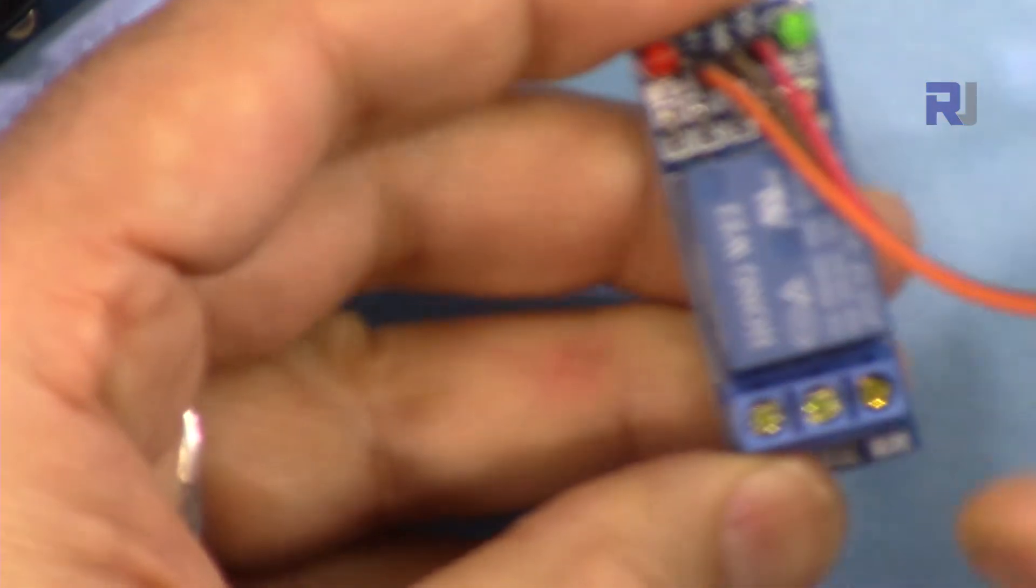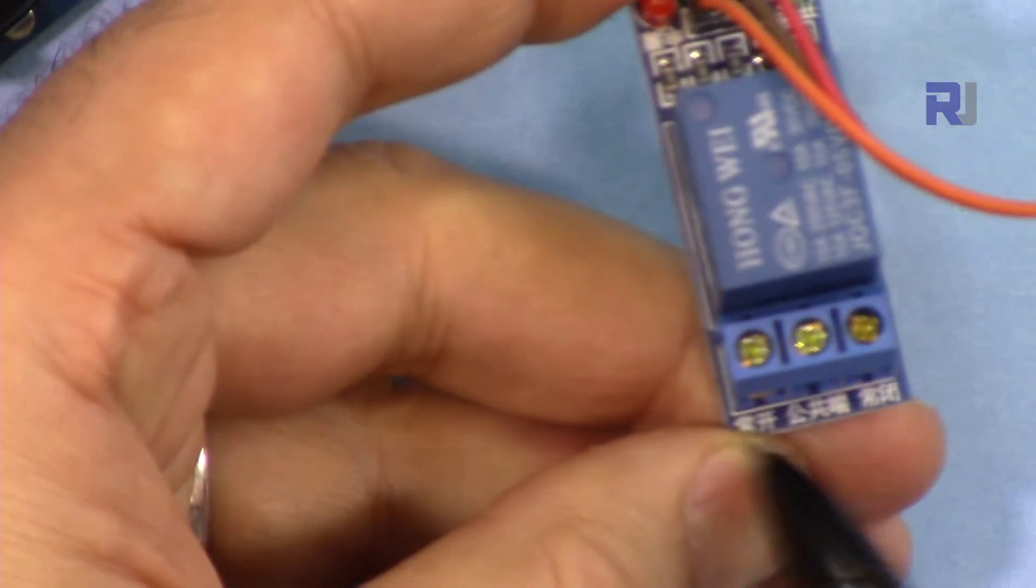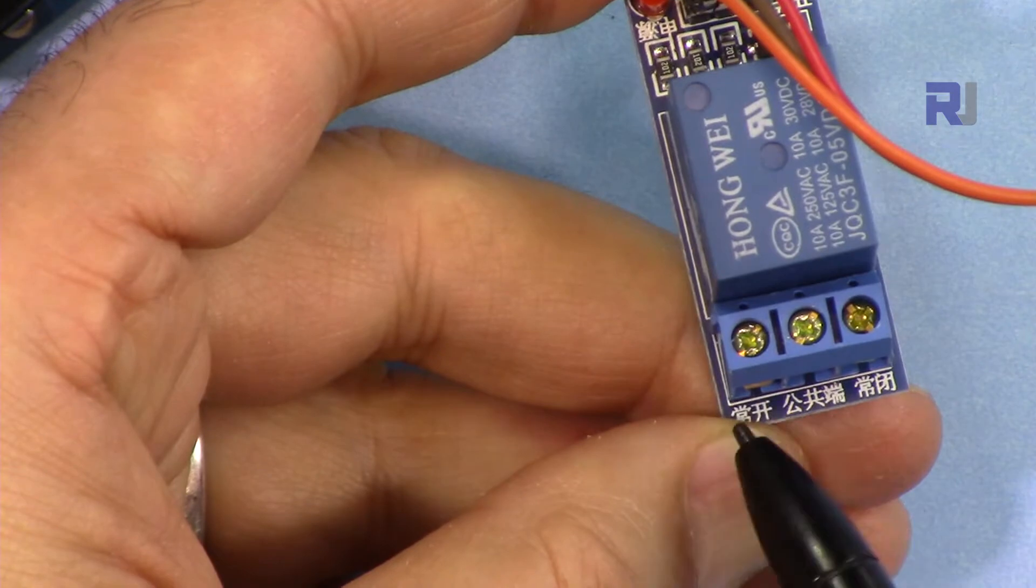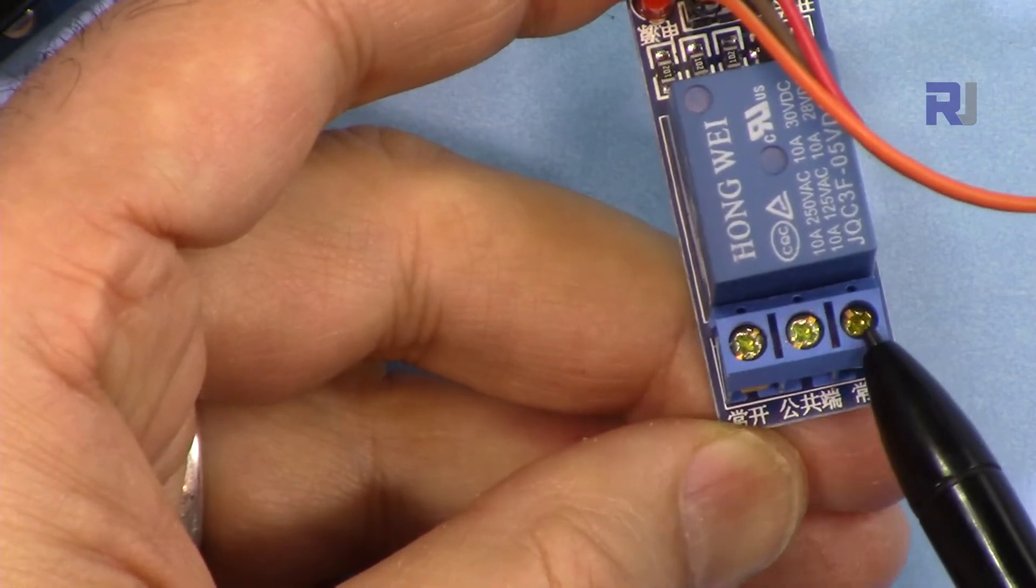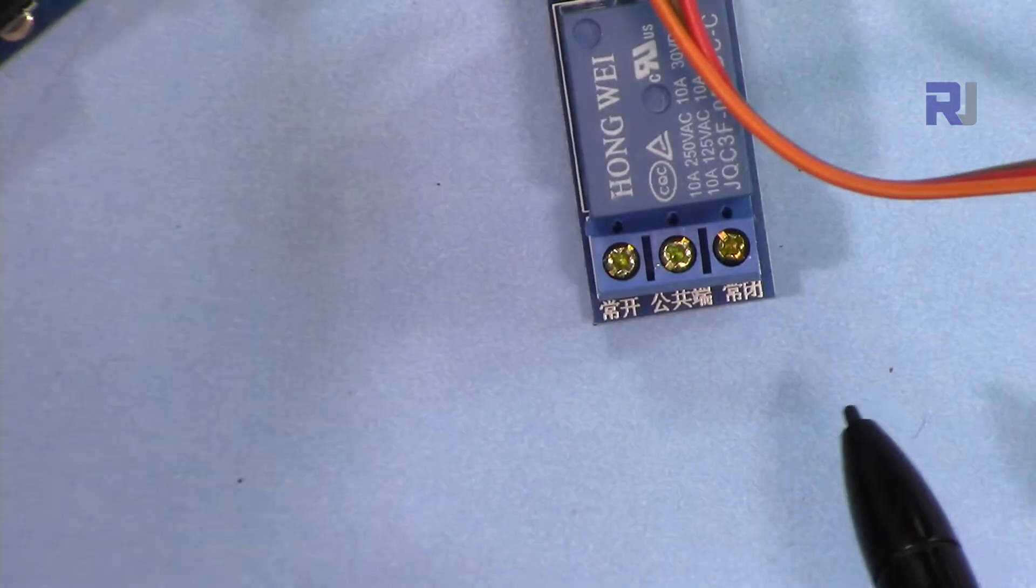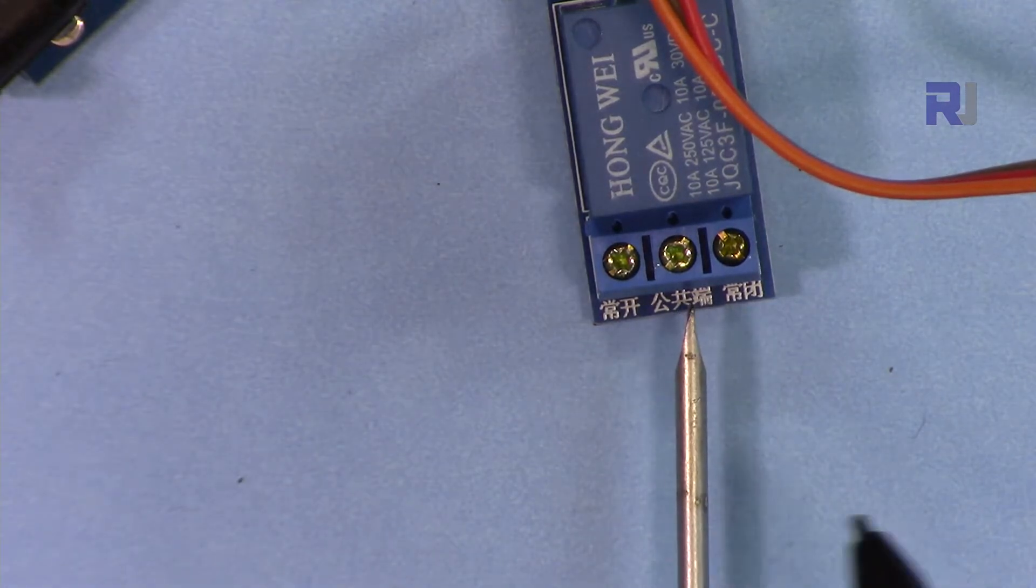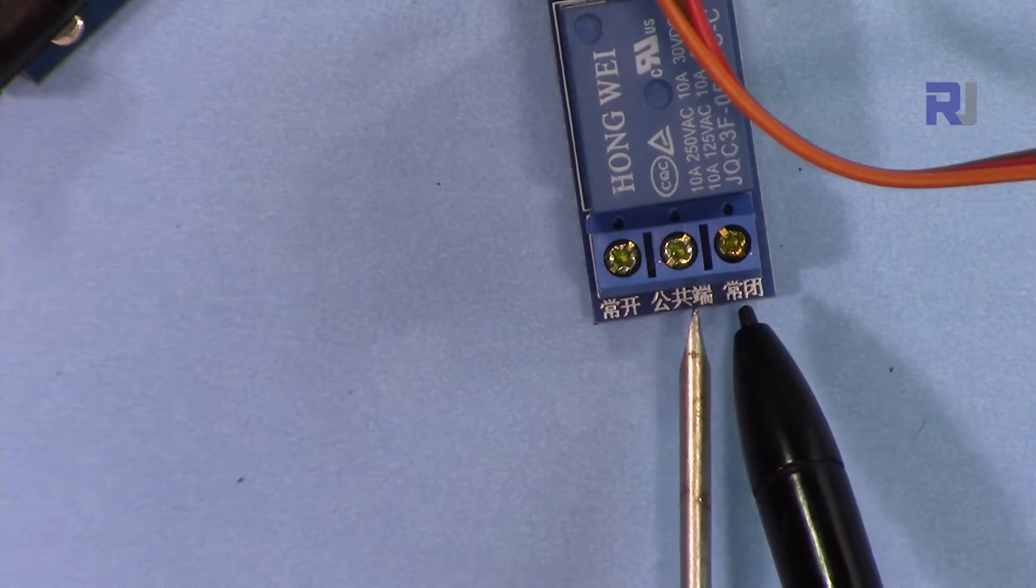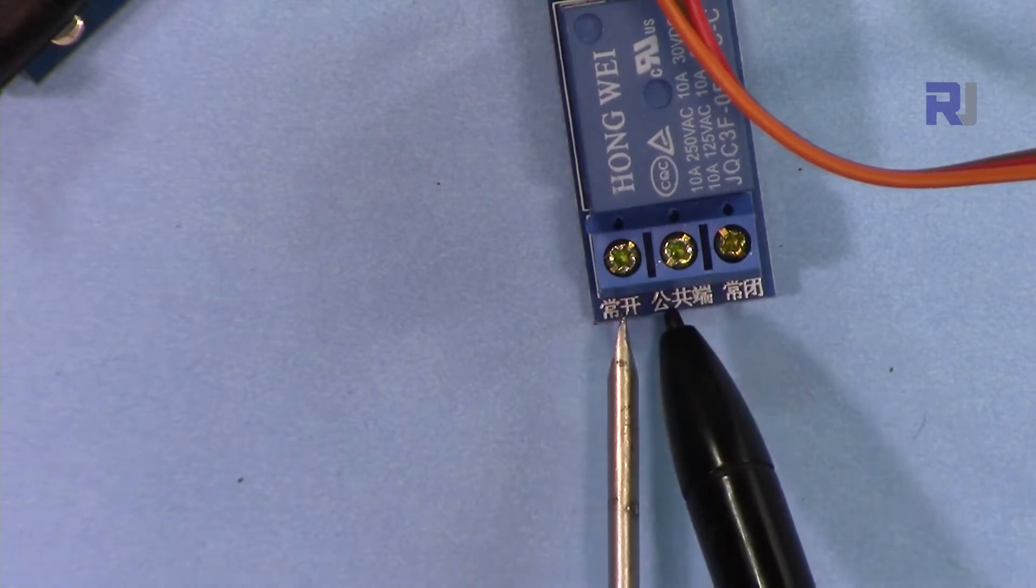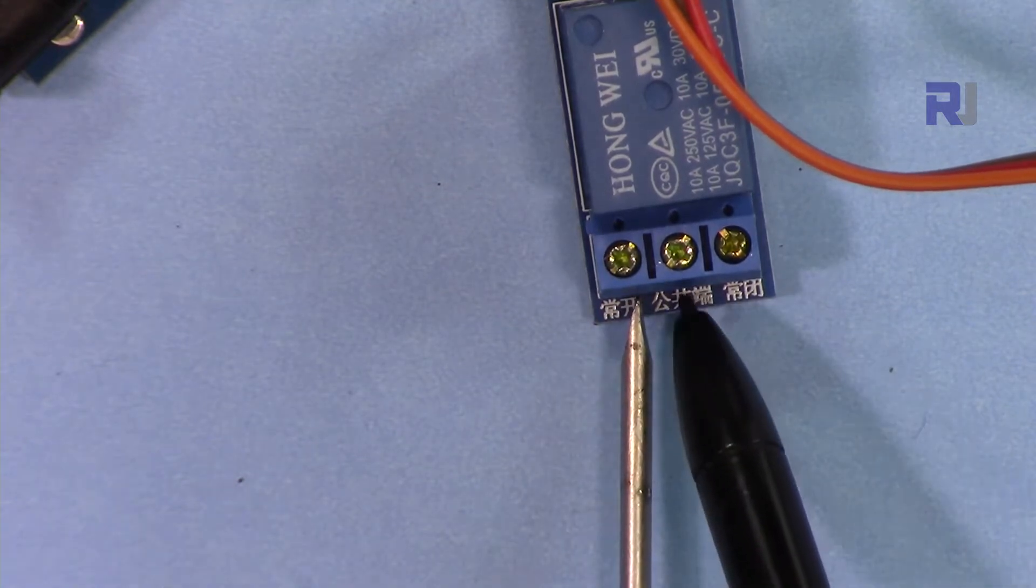Let me briefly explain the relay. The relay has three pins here - these two pins are normally open and this one is normally closed. Whatever wiring you do, you always will have one wire at the middle and the other will be either here, which will be normally closed, or here, which will be normally open. What it means is when the signal comes to the relay, these two wires will connect.